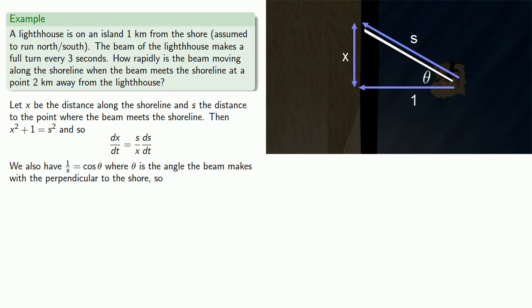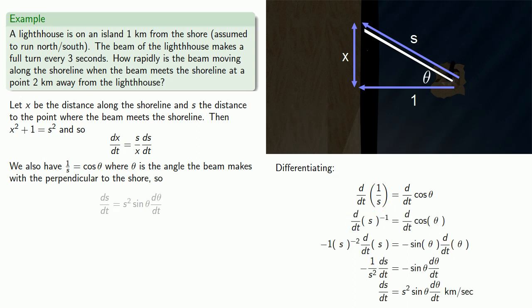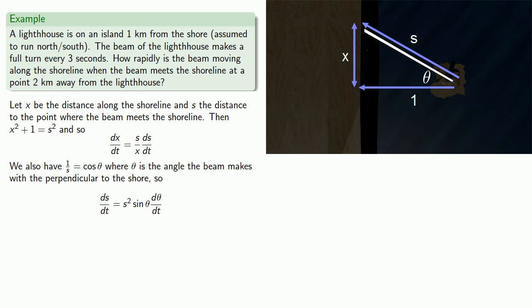So from 1 over s equals cosine theta, we can differentiate with respect to t. And now I have a formula for ds/dt. Except now I need to know what d theta/dt is. So let's think about that. d theta/dt is the rate of change of the angle with respect to time. If we knew how rapidly this angle was changing, we'd know d theta/dt. But we do know how rapidly the angle is changing.